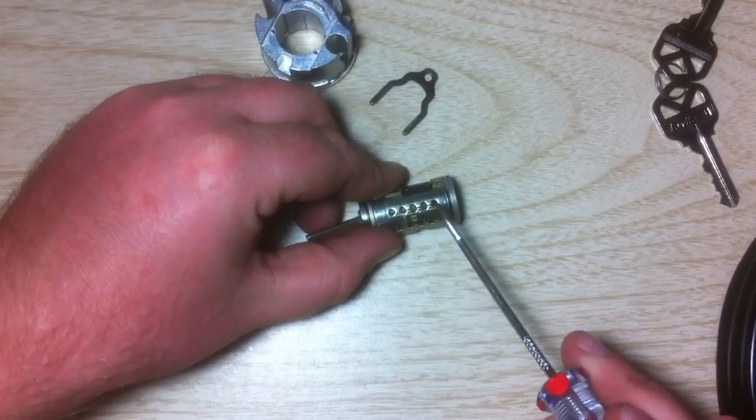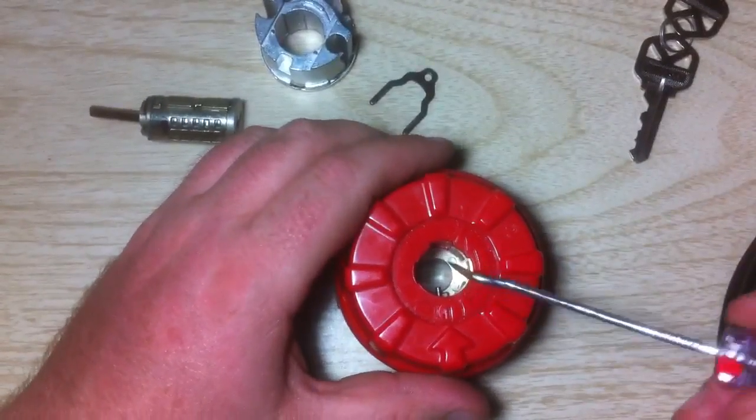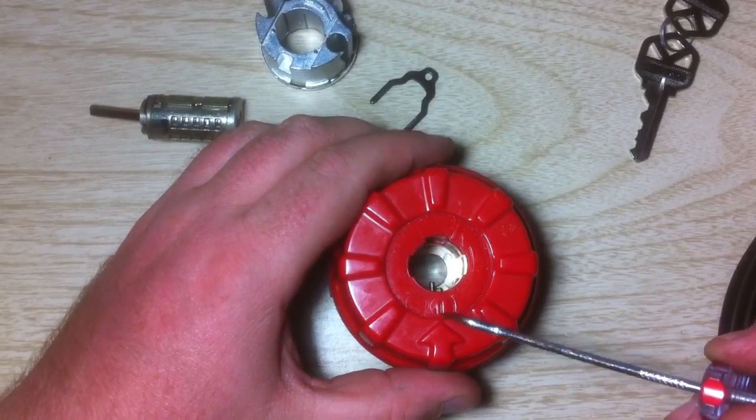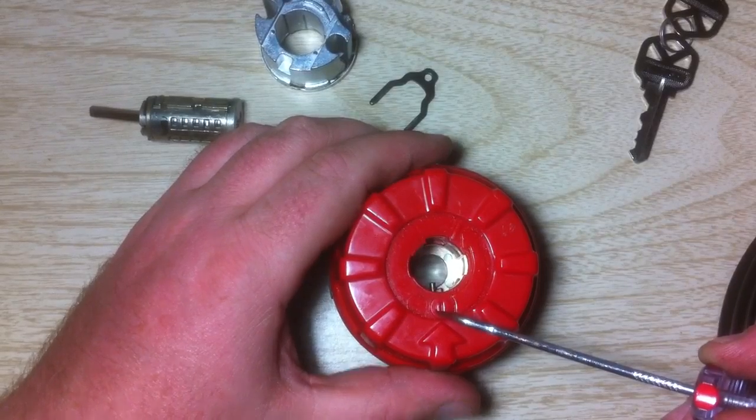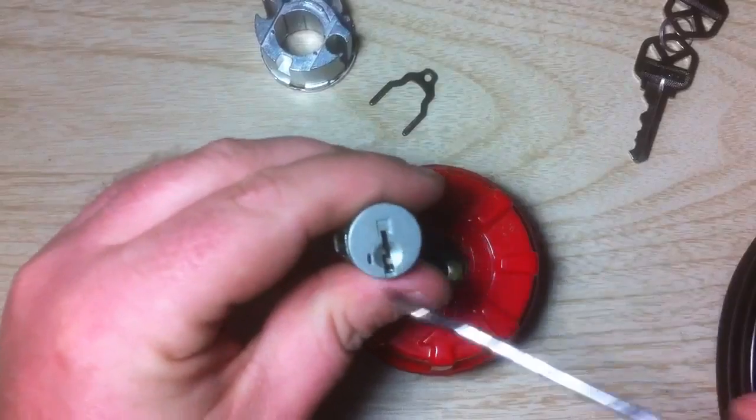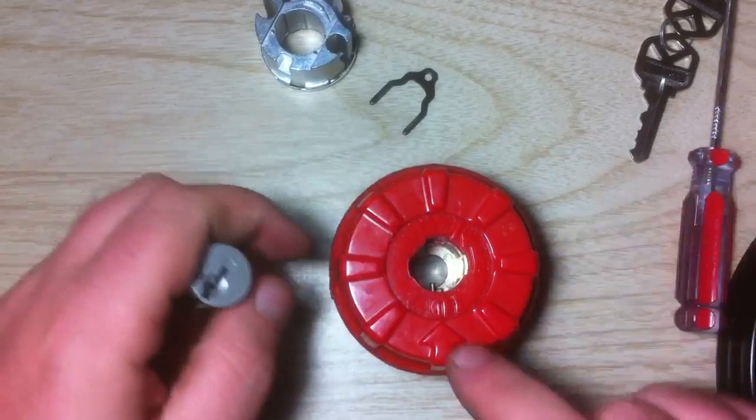So what you do is you take your Kwikset smart key cradle. If you look here, it's got the arrow, and if you look closely it's got a line, and then to the left of the line it's got a little bitty line. This is basically a replication of the face of the plug with the keyway and your line. What you do is you line these two up.